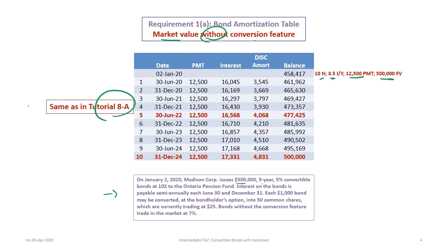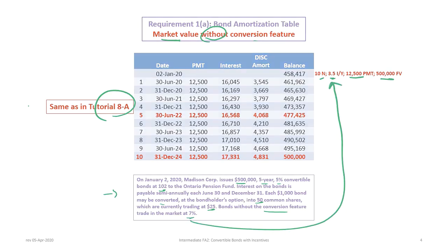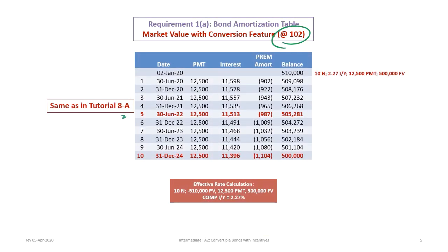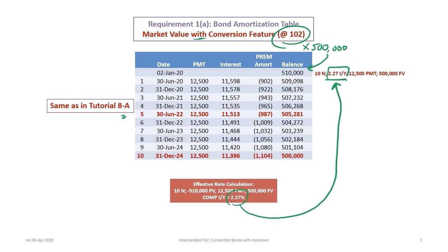The company has a $500,000 five-year, 5% convertible bond sold at 102. What's different here is that each bond can be converted to 50 common shares trading at $25, and the bonds without the conversion feature trade at 7%. That 7% gives us our 3.5% interest rate for discounting. We can also show the market value of the bonds with the conversion feature, calculated the same way. The bonds are sold at 102, so 102% times $500,000 gives us $510,000. We then determine the interest rate based on an effective rate calculation — 2.2714% — which is how it works out in our amortization table.